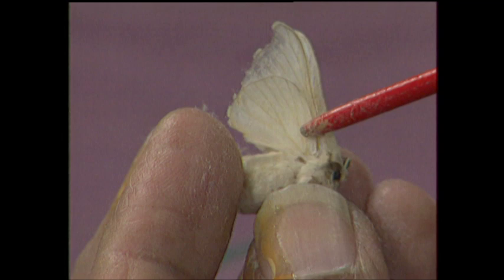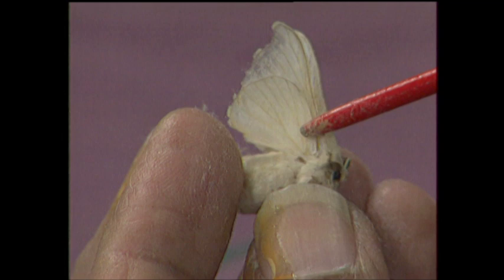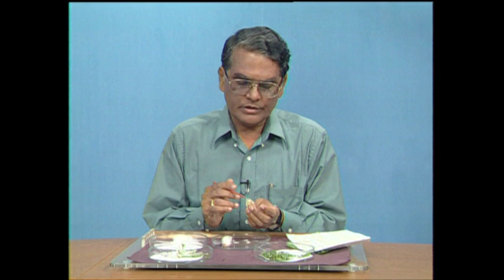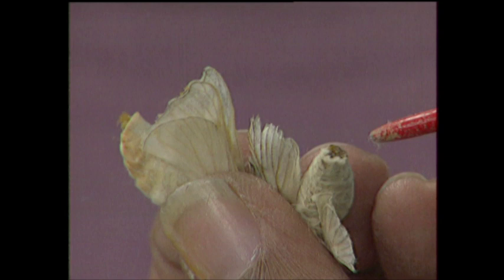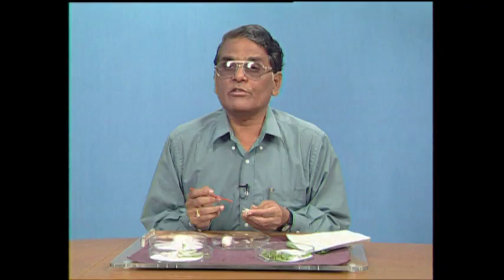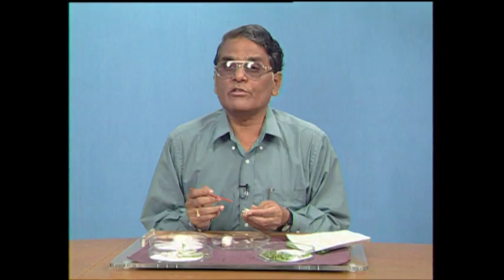The abdomen is lobe-like. In females the abdomen is broader, while in males it is narrower. The male genital organs are clearly visible at the tip of the abdomen. Sex differences can thus be identified at both the pupal and adult stages. After coupling for about two to three hours, decoupling takes place.